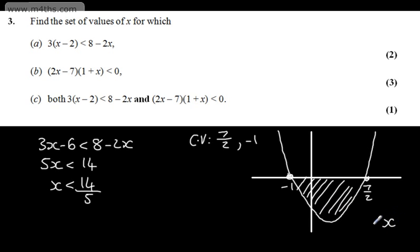So we can say that x is going to be strictly greater than -1, yet in turn strictly less than 7/2. So that is part b.